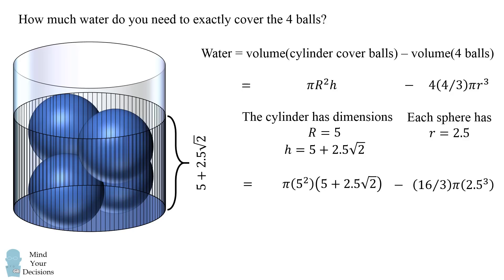And then we can simplify for the answer, which is 125π/6 times the quantity (2 + 3√2). And this is approximately 408.58 cubic centimeters.